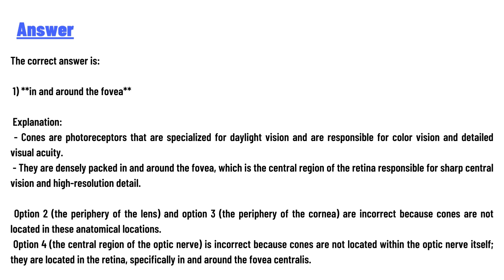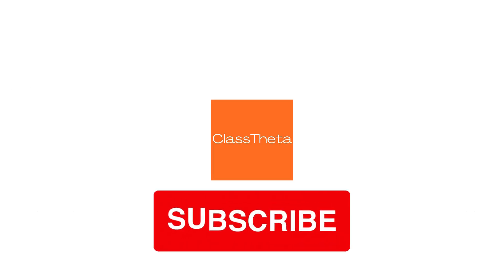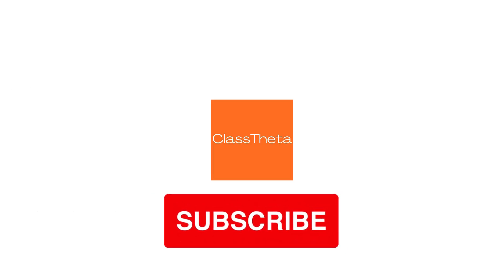Option four is incorrect because cones are not located within the optic nerve itself — they are located in the retina, specifically in and around the fovea. Thank you for watching the video. If you have any question related to this video, please post a comment below.